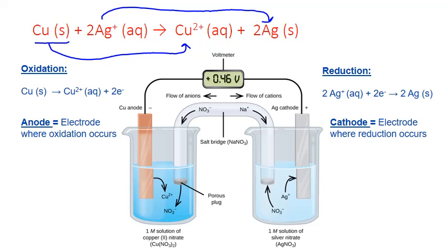On the left we have the oxidation half reaction where electrons are produced. On the right we have the reduction half reaction where the electrons are consumed. Connecting the two half cells we have a metallic wire which allows the electrons to pass from the oxidation half cell to the reduction one. We also have a salt bridge which allows positively and negatively charged ions to move into each solution to help balance the charge transferred between the beakers by the movement of the electrons.